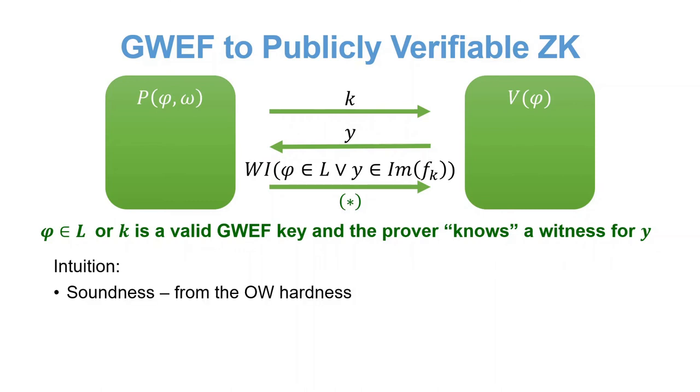Intuitively, soundness will come from the hardness of the WEF, as no efficient inverter can invert the function. So the prover will have to prove that phi is in the language. Zero knowledge will come from the extraction property, as the simulator will use the extractor on the verifier's code to find a valid pre-image.